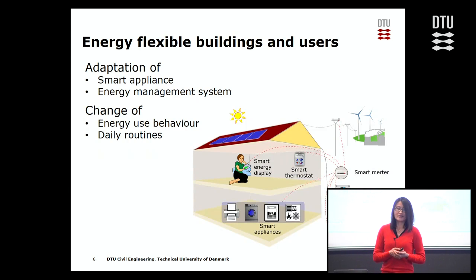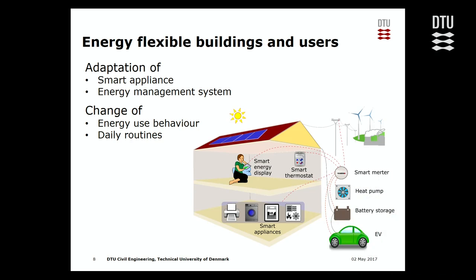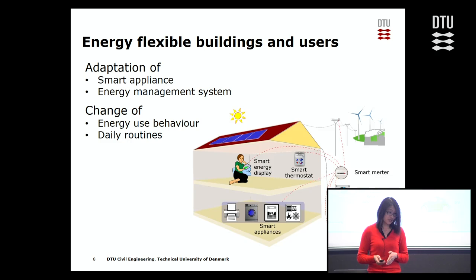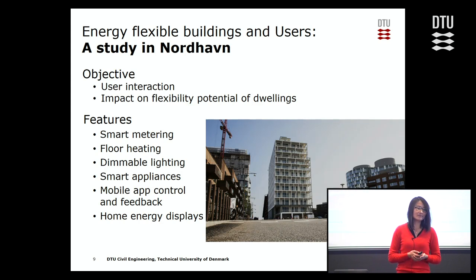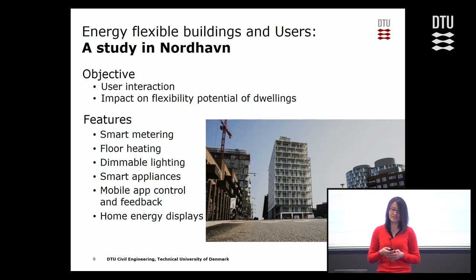Our focus is on energy flexible buildings and users. In energy flexible buildings, smart appliances and energy management systems will be applied in order to collect information such as energy prices and help users make a decision on whether it's a good time to use energy or not — whether it's better to wait one or two hours to start using a dishwasher or washing machine. Therefore, user behavior and daily routines will need to be changed. This is one of the research topics we are currently working on. A field study is being conducted in NOHA to investigate user interaction with smart grid technologies and the user impact on energy flexibility potential of buildings.